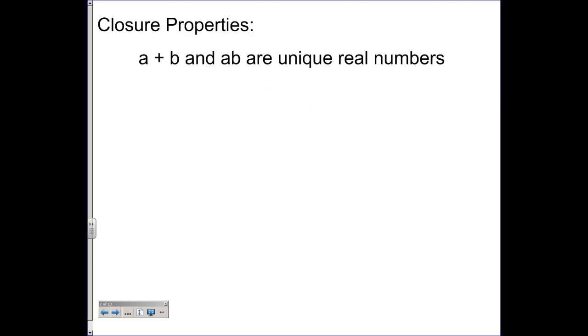The first one is the closure property. It says a plus b and a times b, when they're written side by side like this that means times, are unique real numbers. So basically they're saying if you have, let's say, 12 plus 5, which could be the representation of plus,